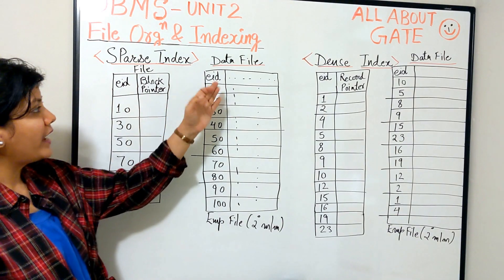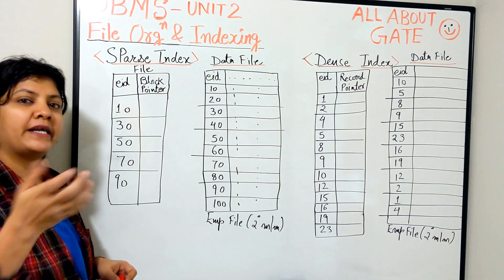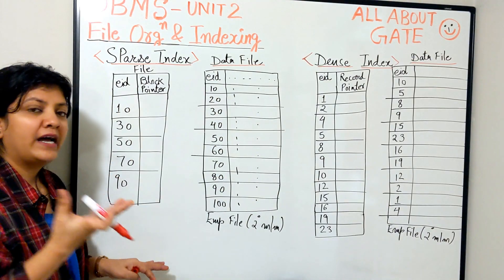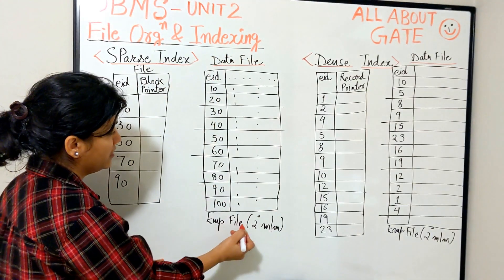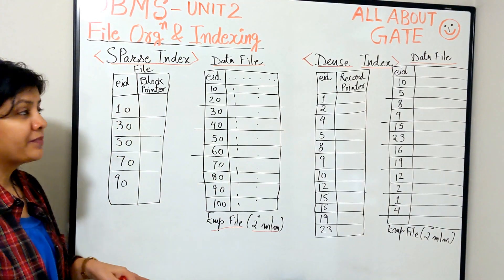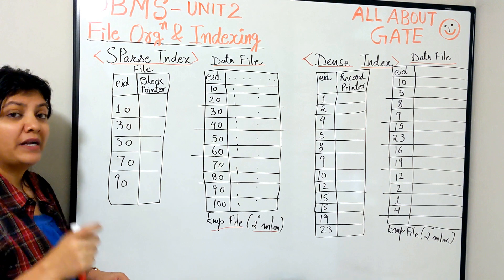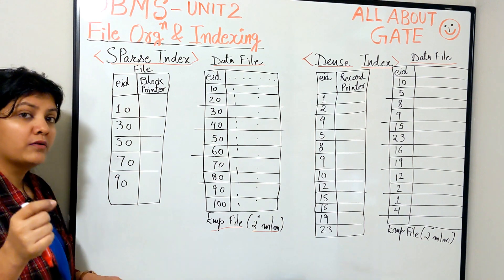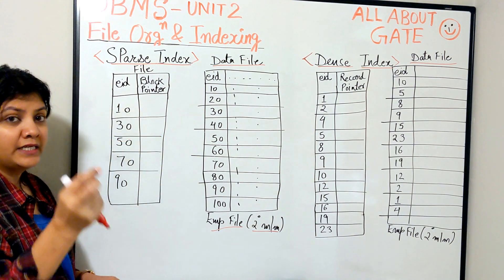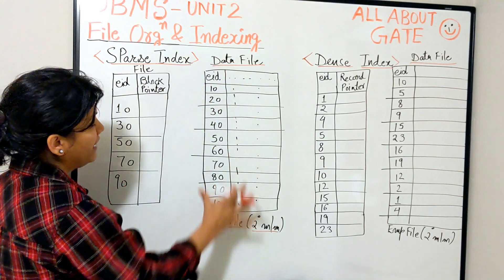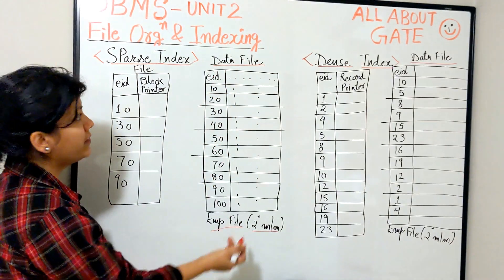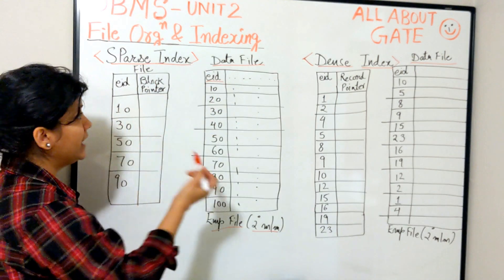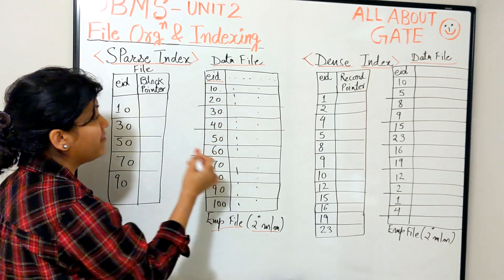The employee file has employee ID, employee name, salary, department ID, etc. This is stored as a data file on secondary memory. In one scenario, my index is built on employee ID, and the employee file is actually sorted on employee ID. Here is that example — the employee ID shown here is in sorted order, and the employee ID is the primary key.